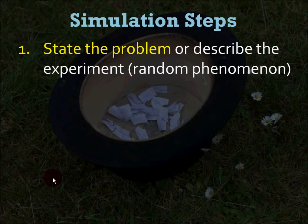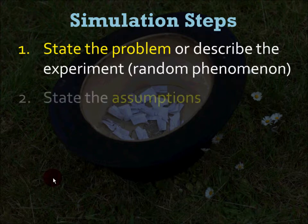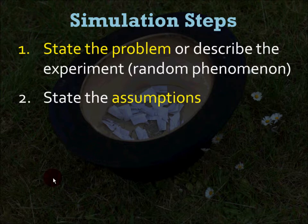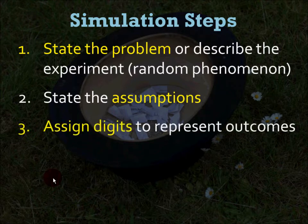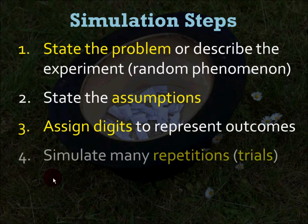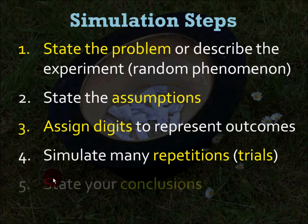These are the five steps to a simulation. First, you must state the problem or describe the experiment — this will be some random phenomenon. Second, you will state the assumptions. Third, you will assign digits to represent outcomes, similar to what you were doing when designing experiments. Fourth, you will simulate many repetitions or trials — the more times you do it, the more accurate your simulation will be. And finally, you will state your conclusions.